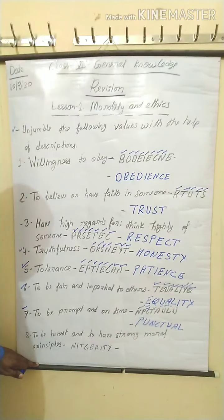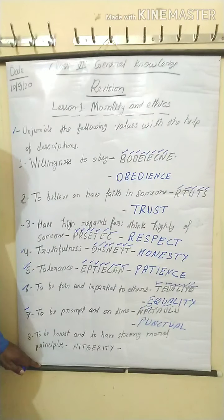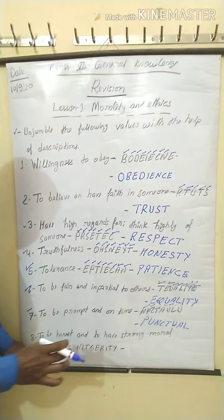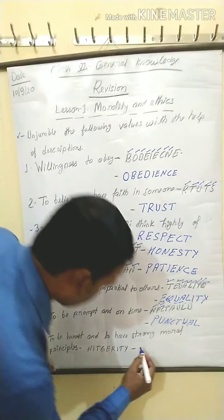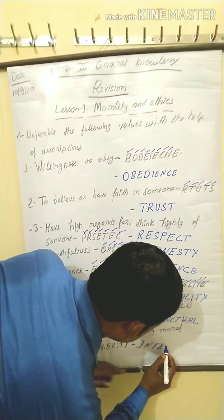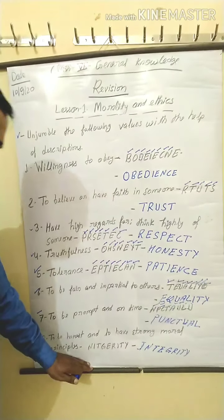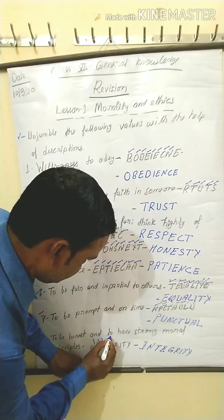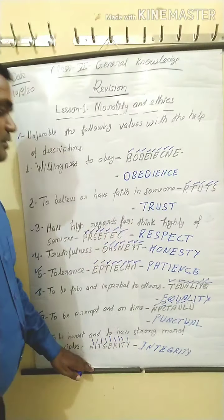Next, number eight: the jumbled letters given are P-U-N-C-T-U-A-L — wait, correcting — N-I-T-G-E-R-I-T-Y. What is the correct word of this jumbled word? The answer is Integrity. I repeat: Integrity.